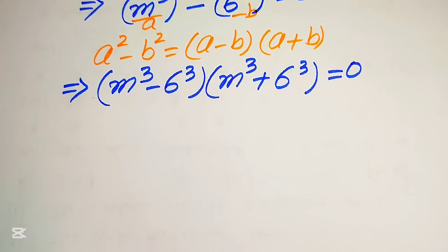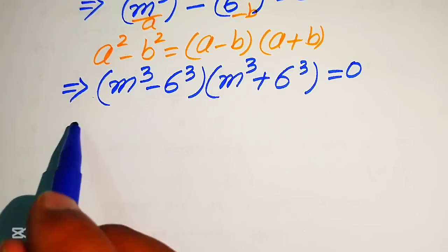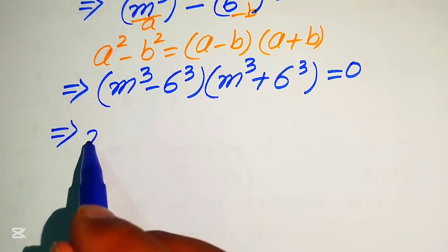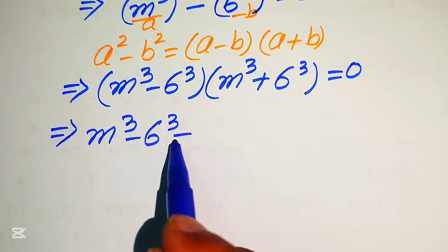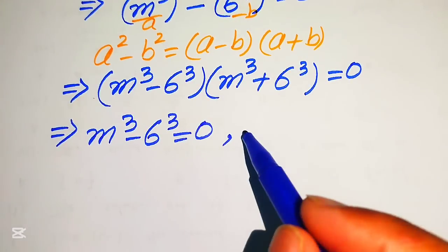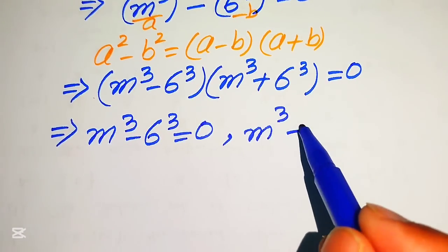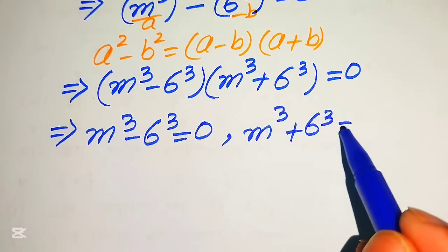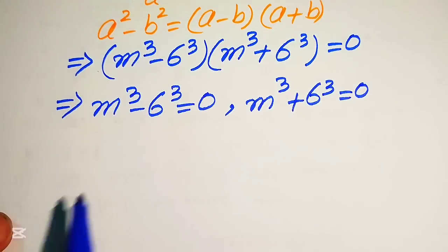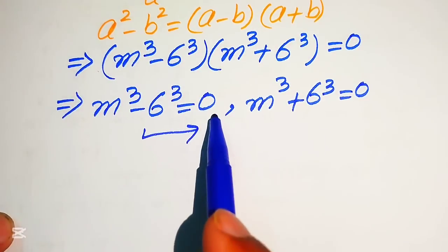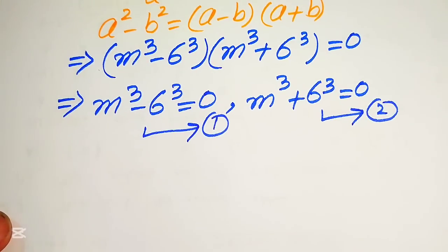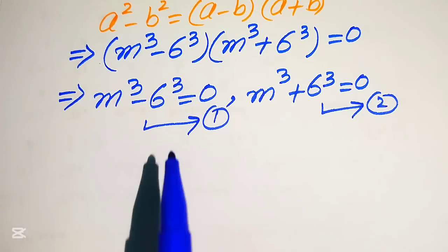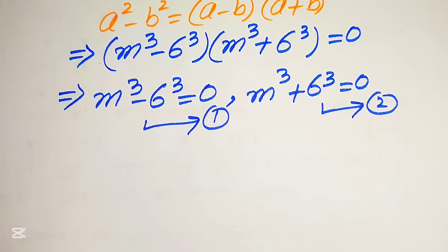We divide this equation into two cases. The first case is m cubed minus 6 cubed equals to 0, and the second case is m cubed plus 6 cubed equals to 0. We call these equation number 1 and equation number 2. We will now solve these two equations for the values of m, starting with equation number 1.